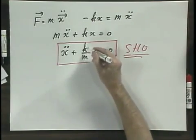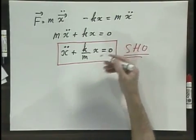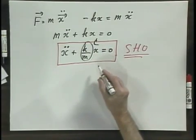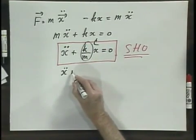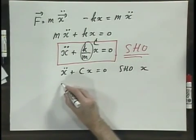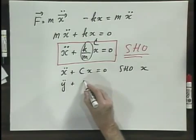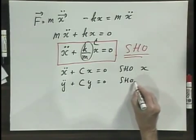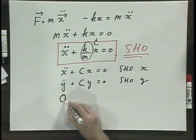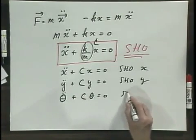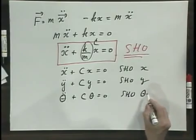K over m is given for a particular system. Writing in more general terms, call it c, so the differential equation becomes x double dot plus c times x equals zero. That is a simple harmonic oscillation in x. If you encounter a similar equation in y, it would be a simple harmonic oscillation in y. And if you encounter it in terms of an angle, like we had with the pendulum — the angle theta — it would be simple harmonic oscillation in theta.